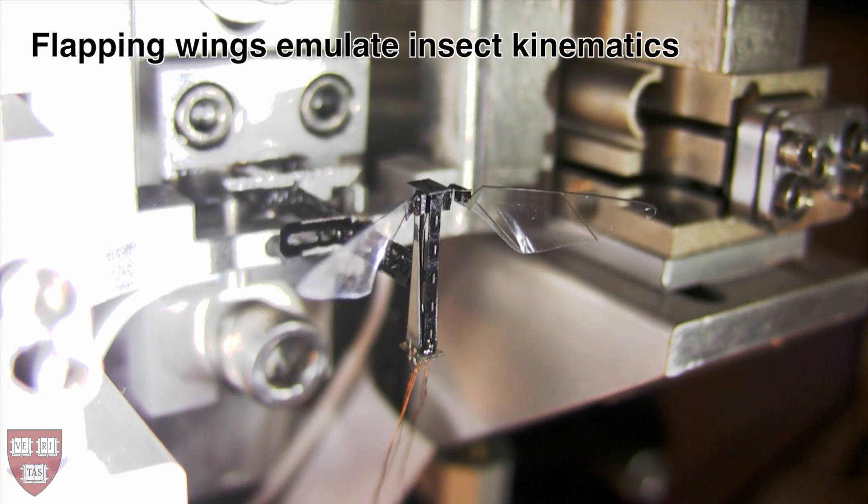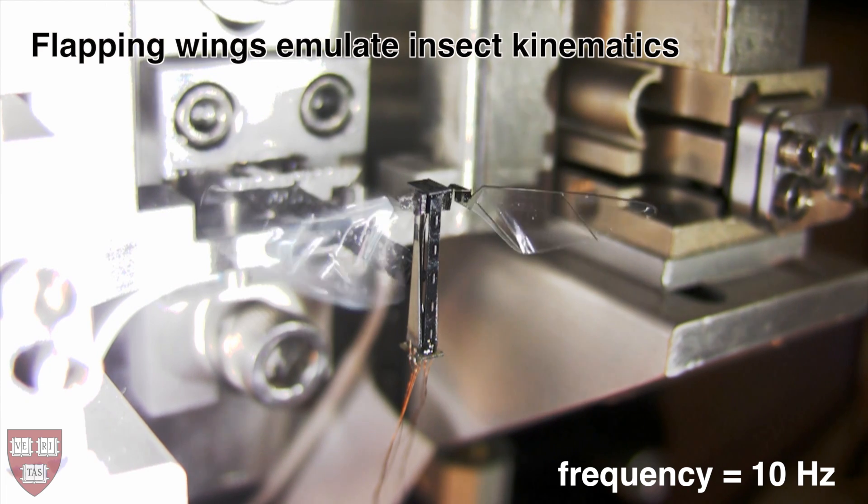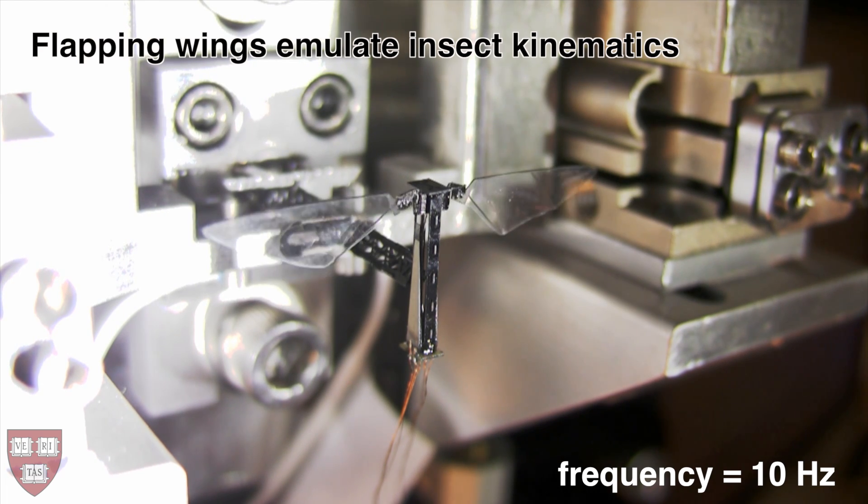This vehicle produces aerodynamic lift by flapping its wings, with kinematics that closely resemble those of flies. By modulating wing stroke motions, torques can be applied to control the flight of the vehicle.